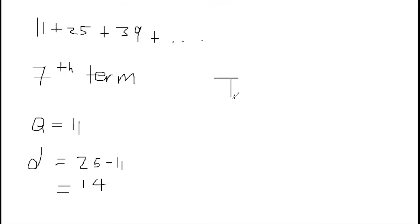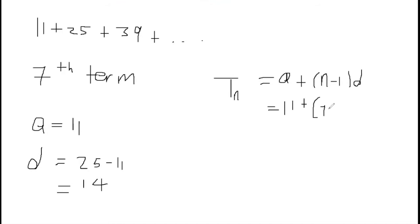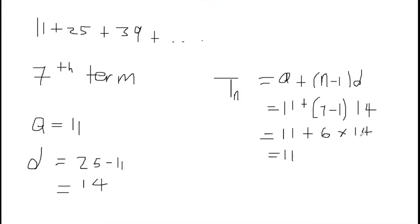Now we have the first term and the common difference. The term formula is A plus (N minus 1) times D. The seventh term means N equals 7. Substituting: A is 11, N is 7, and D is 14. So we have 11 plus (7 minus 1) times 14, which is 11 plus 6 times 14. That gives us 11 plus 84, which equals 95.